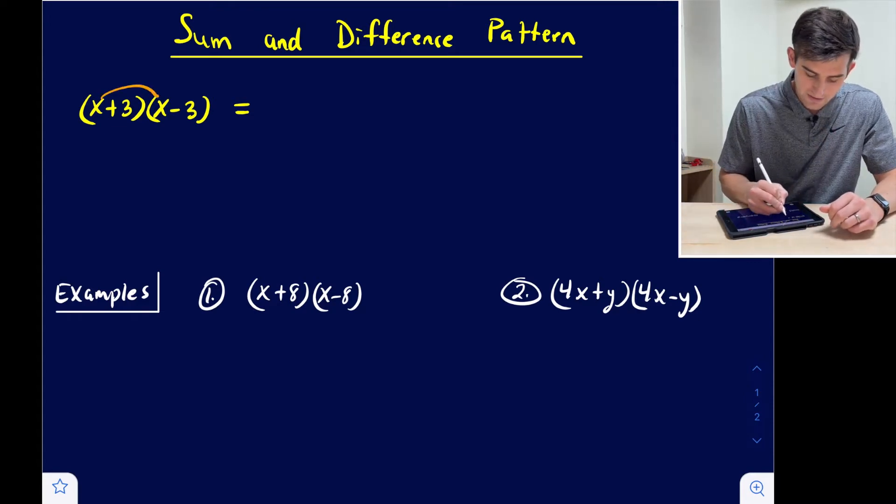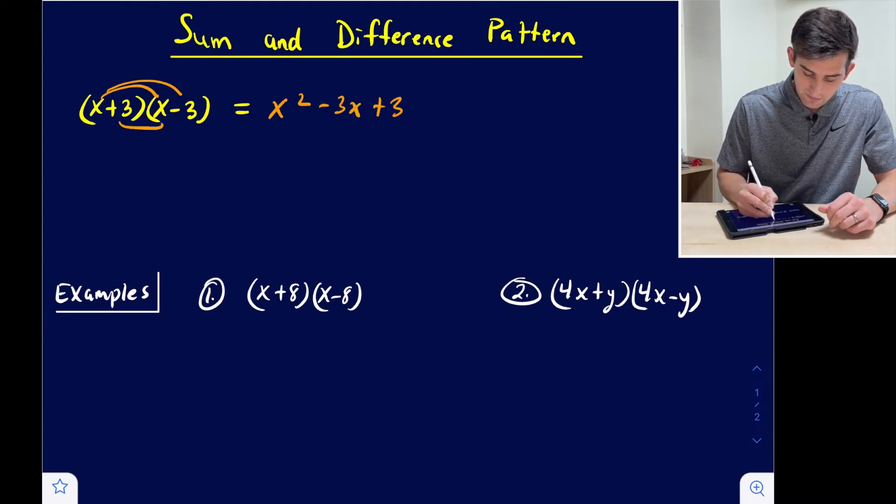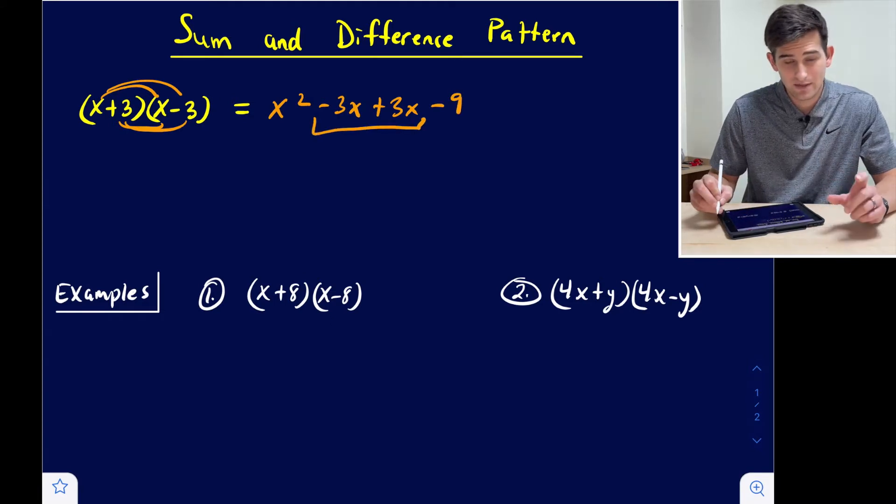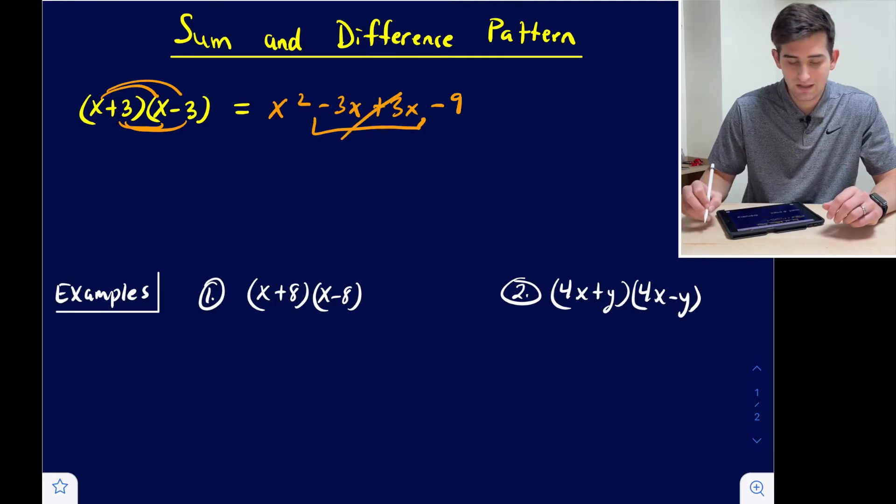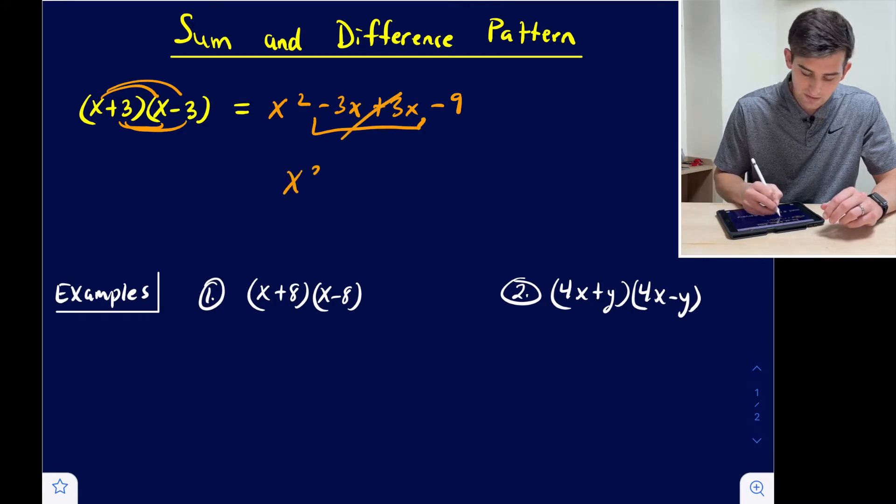If we're going to foil, x times x would be x squared, x times negative 3 would be negative 3x, 3 times x would be positive 3x, and 3 times negative 3 would be negative 9. So if we combine our like terms, notice what happens in the middle. Our x terms cancel out, so we're just left with x squared minus 9 as our final answer.